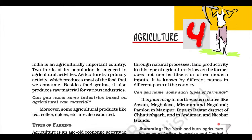In slash and burn agriculture, farmers clear a patch of land and produce cereals and other food crops to sustain their family. When the soil fertility decreases, the farmers shift and clear a fresh patch of land for cultivation. This type of shifting allows nature to replenish the fertility of the soil through natural processes. Land productivity in this type of agriculture is low, as the farmer does not use fertilizers or other modern inputs. It is known by different names in different parts of the country.